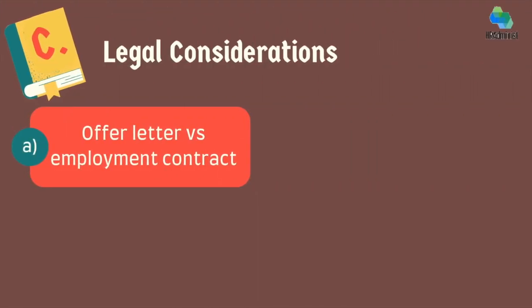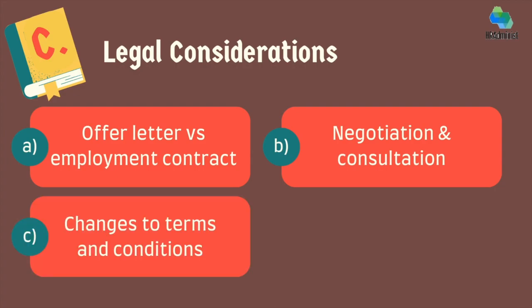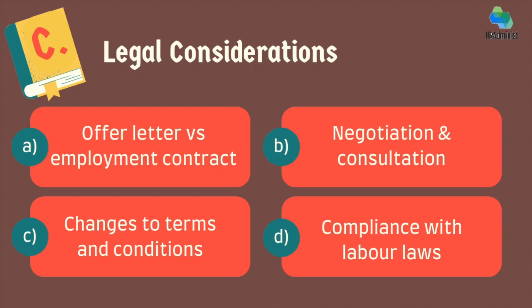Under legal considerations, the first category is offer letter versus employment contract, wherein the company needs to ensure the employment contract comprehensively covers all terms and conditions, differentiating between the offer letter and the detailed employment contract. Second is negotiation and consultation, which encourages both parties to carefully review and negotiate contract terms before signing and to seek legal advice for complex agreements. You should also specify the process for making changes to the contract, as any amendments should be mutually agreed upon and documented. Finally, ensure that the employment contract complies with relevant labour laws such as the Industrial Disputes Act, Minimum Wages Act, and any other applicable legislation, as non-compliance may lead to legal consequences.